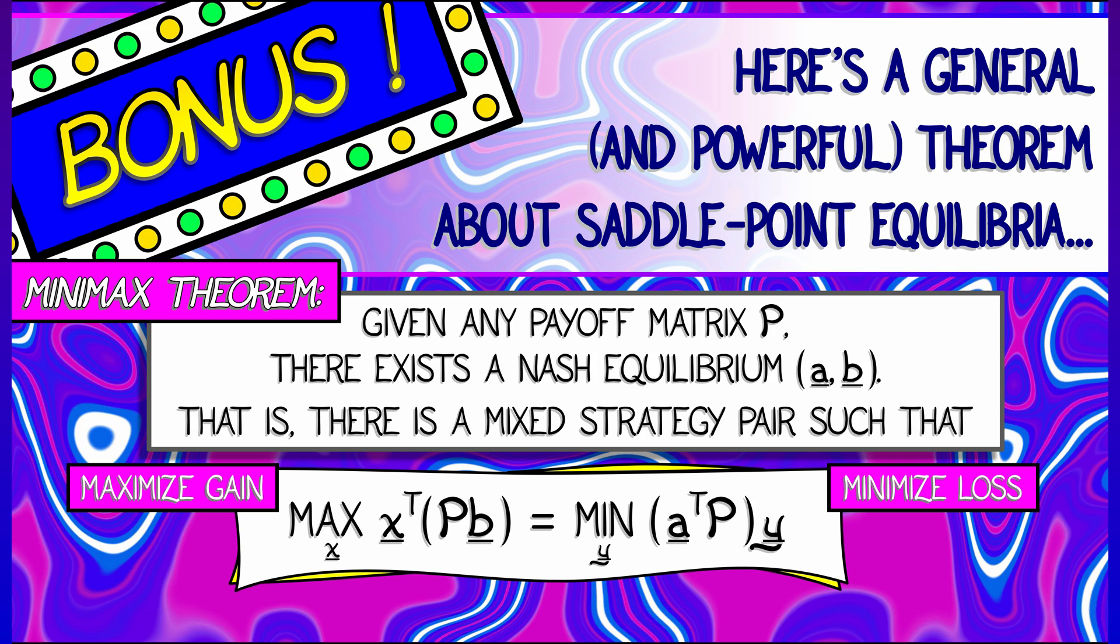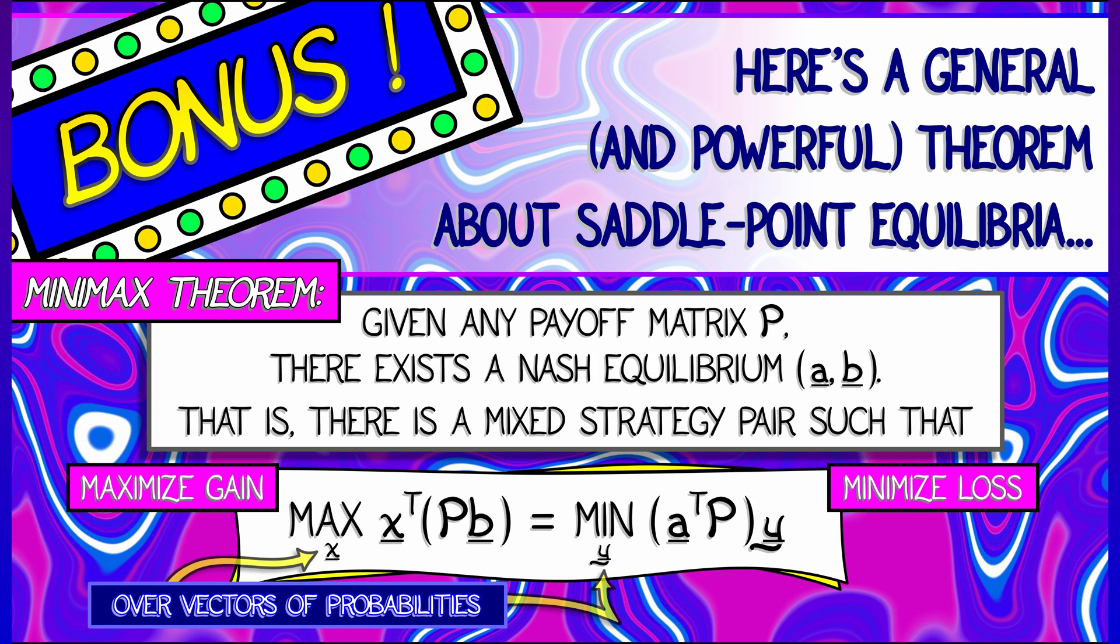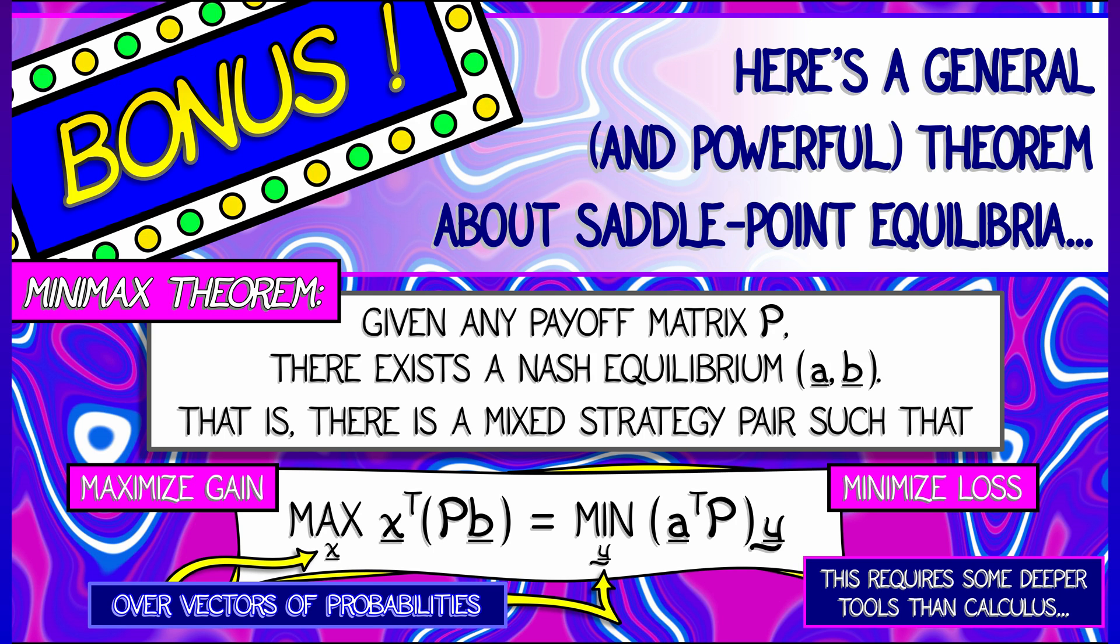That is, the first player maximizes the gain. The second player minimizes the loss. And again, these maxima, these minima, these are over probability vectors.